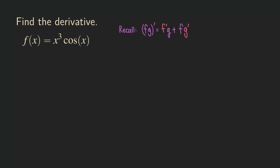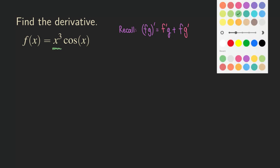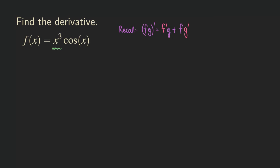Okay, so now first, let me highlight the two functions right here. One of them is x cubed. What about the second one? The second one is cosine of x.